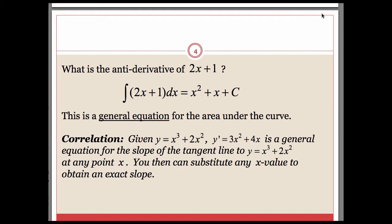Let's connect this back to something we've done before with derivatives. Suppose you had the function y equals x cubed plus 2x squared. The derivative would be 3x squared plus 4x. We refer to that as a general equation for finding the slope of the tangent line to that original curve at any point x. All we would do is substitute any x value into that derivative expression to get the exact slope at that x value.